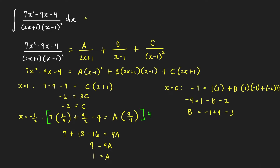Therefore, we can write our integral as the integral of 1 over (2x plus 1), plus 3 over (x minus 1), plus negative 2 over (x minus 1)², all times dx.